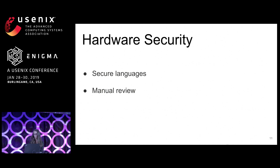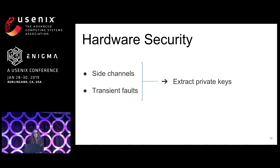There's some recent research into the development of secure languages for hardware design, and this is promising. But for the most part, manual review is still largely how security validation is done. The research community has studied side channels extensively, and there has been research into transient faults and how those can be used to leak secret key information. But by and large, the kinds of bugs that result from people writing code and making mistakes have been largely ignored.